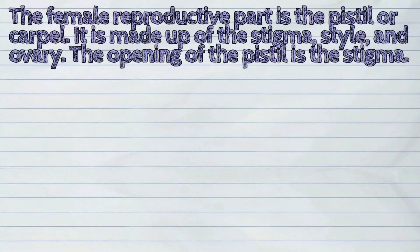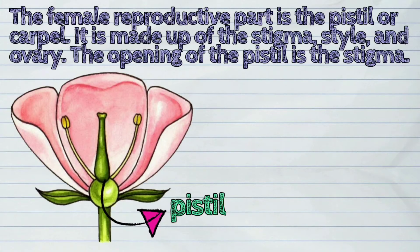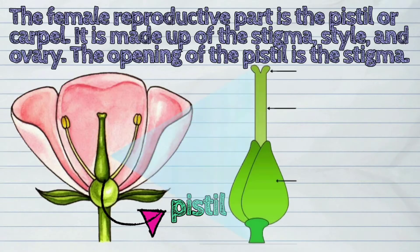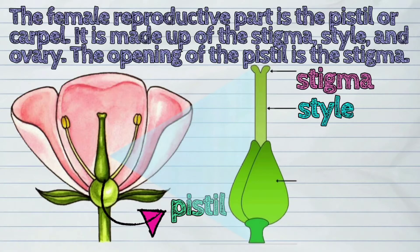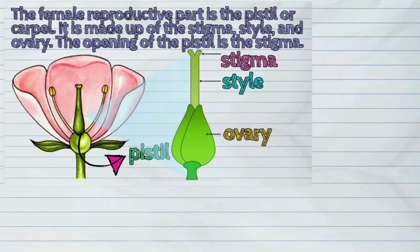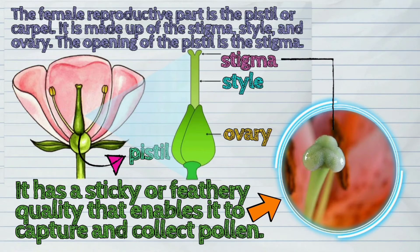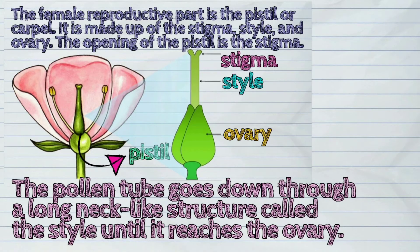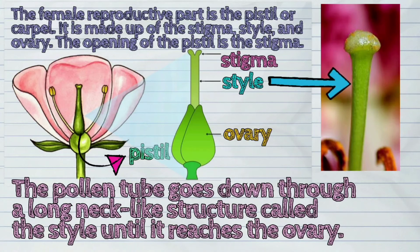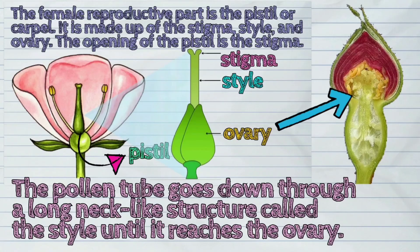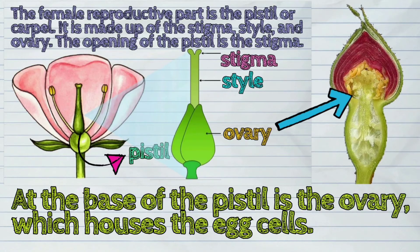The female reproductive part is the pistil or carpel. It is made up of the stigma, style, and ovary. The opening of the pistil is the stigma; it has a sticky or feathery quality that enables it to capture and collect pollen. The pollen tube goes down through a long neck-like structure called the style until it reaches the ovary. At the base of the pistil is the ovary, which houses the egg cells.